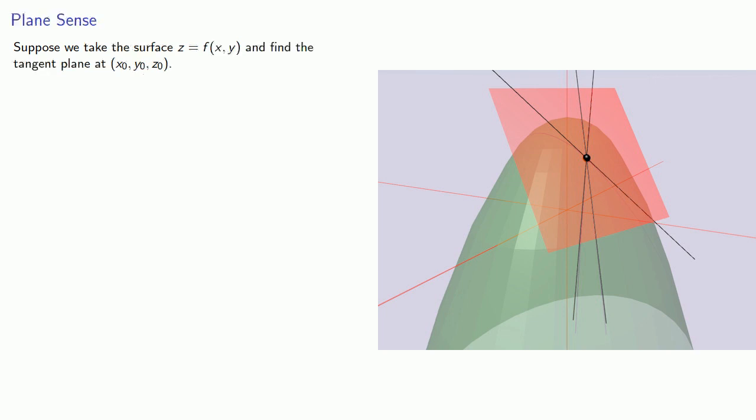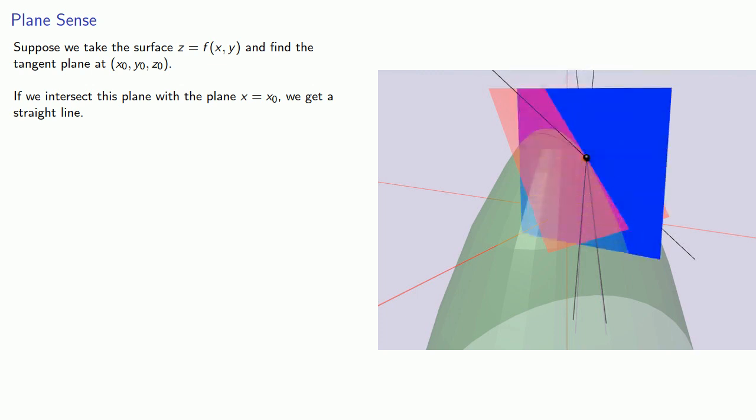Well, let's think about this a little bit more. Suppose we take the surface z equals f and find the tangent plane at a point. Now if we intersect this plane with the plane x equals x0, well that's the intersection of two planes and that will give us a straight line.